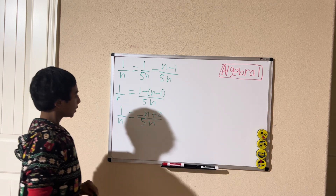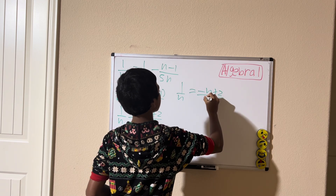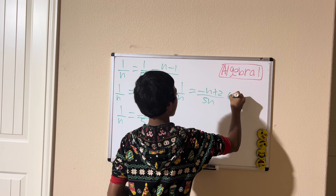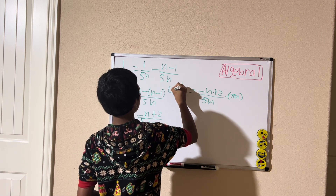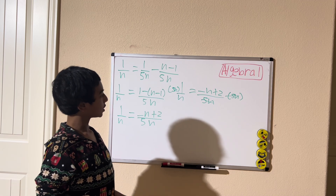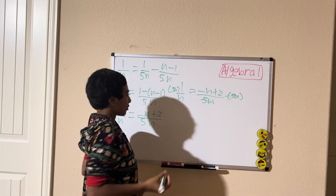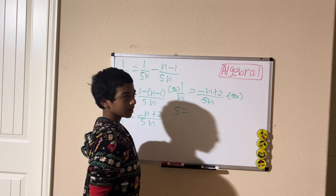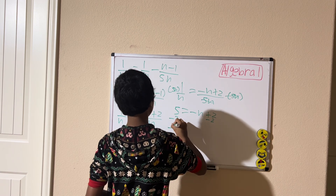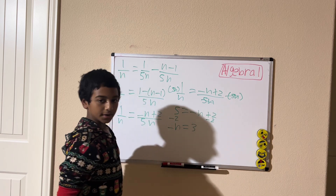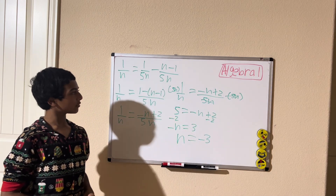Now let's multiply both sides of the equation by 5n. Multiplying by 5n will cancel out the denominator. On the other side, 5n divided by n is 5, and 5 times 1 gives us 5. So we have 5 equals negative n plus 2. Subtracting 2 from both sides gives negative n equals 3, which means n equals negative 3. So negative 3 is our solution for the second example.